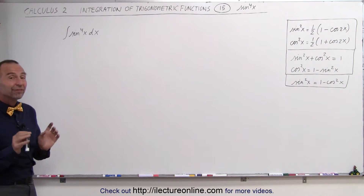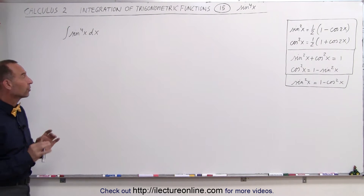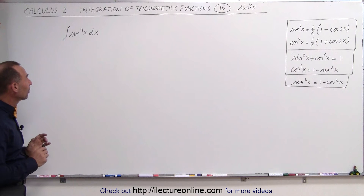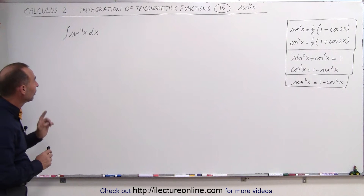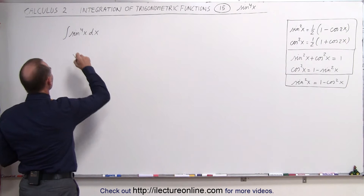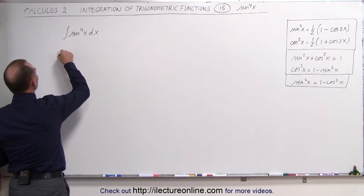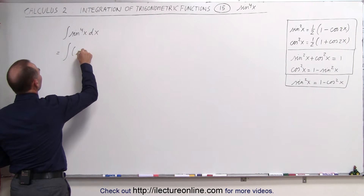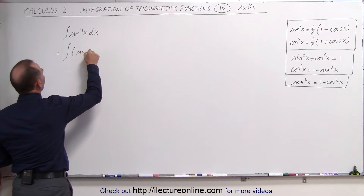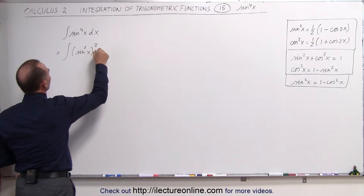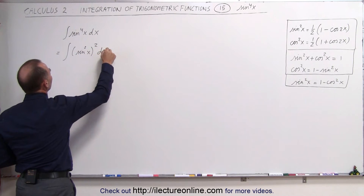It all depends on finding the right tricks to do this. We need to simplify this as much as possible. What we can start out doing is write this as the integral of sine squared of x, quantity squared, times dx.